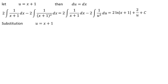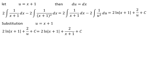Next, substituting u equals x plus 1 back, we get 2 times ln|x+1| plus 2 over u plus C equals 2 times ln|x+1| plus 2 over (x+1) plus C.